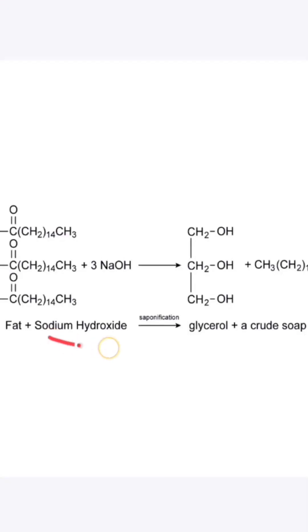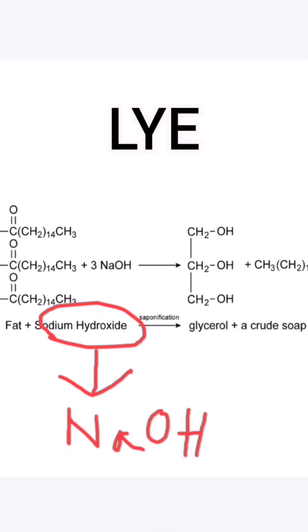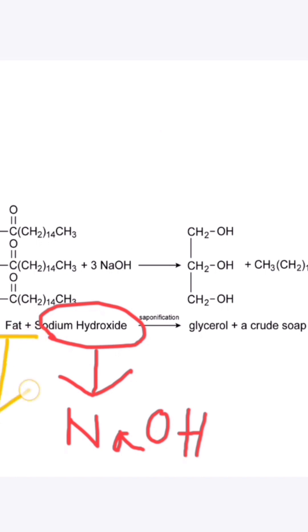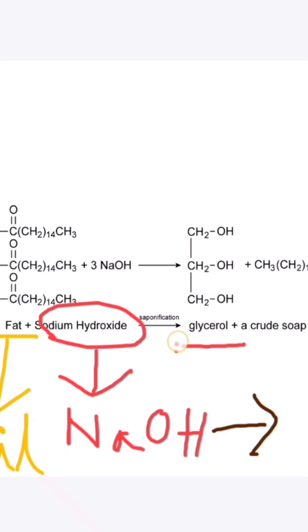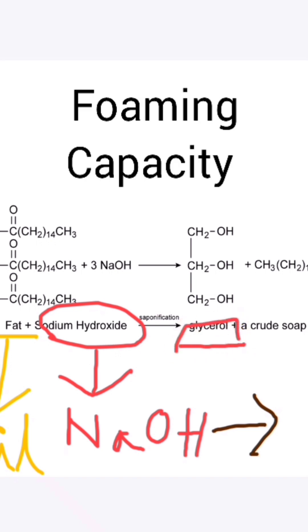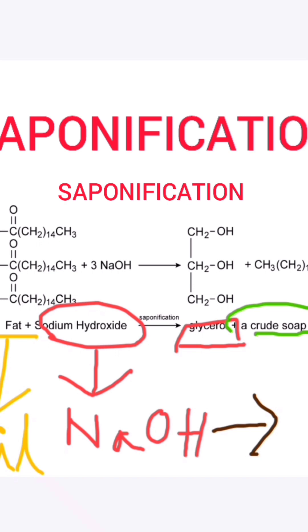In the presence of sodium hydroxide or NaOH, also referred to as lye, any kind of oil or fat will undergo hydrolysis to produce soap and glycerol. The glycerol formed can be removed through distillation. If not purified, the glycerol will affect the foaming capacity of the soap and less foam will form. This soap-forming reaction is known as saponification.